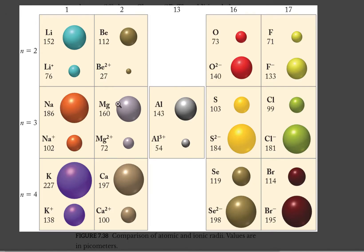Let's look at the graph again, this time comparing atom size to ion size. We can see that sodium ion has gotten much smaller — it has lost that outer shell, and it has more protons than neon does. This trend holds for all cations on the list: cations will always be smaller than their neutral companion atom.